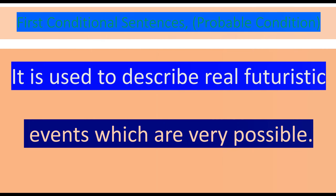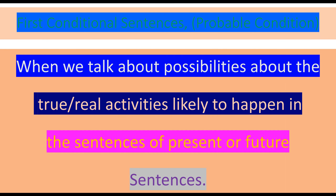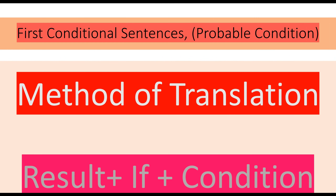The method of translation: this type of conditional sentence is used to describe real futuristic events which are very possible. When we talk about possibilities about true, real activities likely to happen in present or future sentences — just like 'you will be pleased if you receive an award.' These types of sentences are translated using this method.